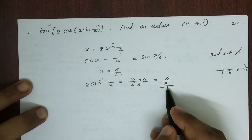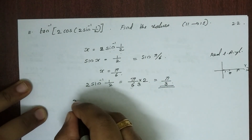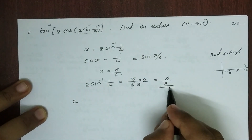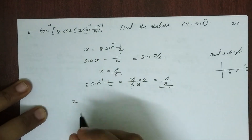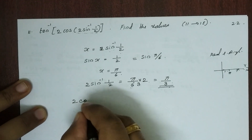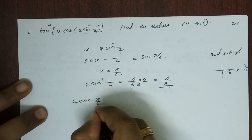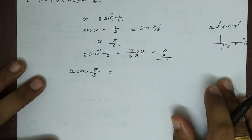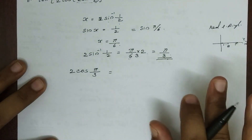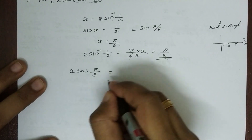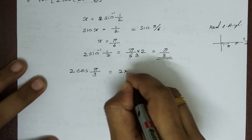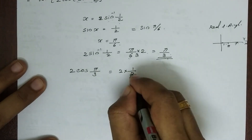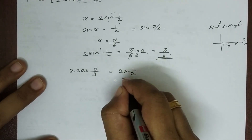So, 2 sin inverse 1 by 2: we have to choose pi by 3, because sin inverse 1 by 2 equals pi by 6, and 2 times pi by 6 equals pi by 3. Then cos of pi by 3 — cos 60 degrees is 1 by 2 — so 2 into 1 by 2 equals 1.